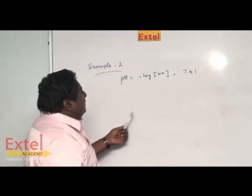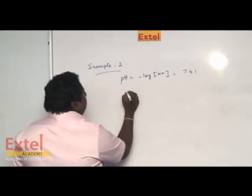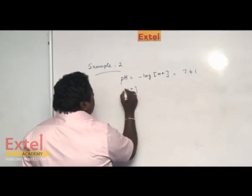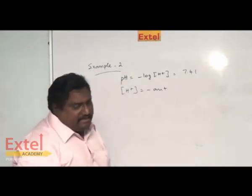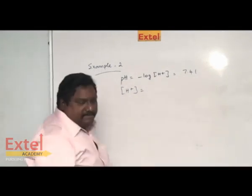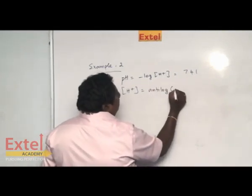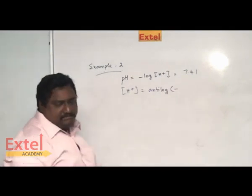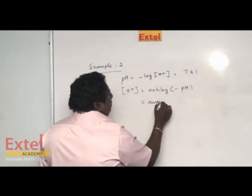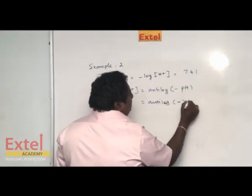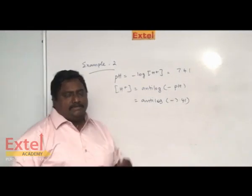So pH can be written as 7.41. We have been asked to calculate H⁺. H⁺ concentration can be written as antilog of minus pH value. Antilog of minus 7.41. How to see antilog of minus 7.41? I will teach you.